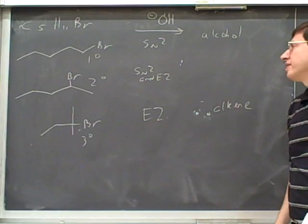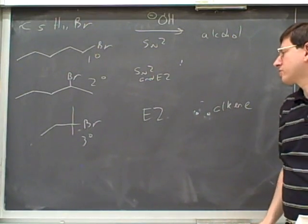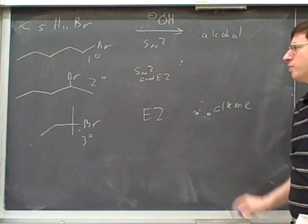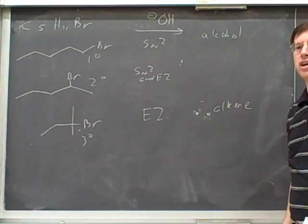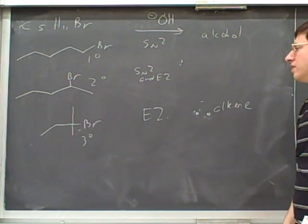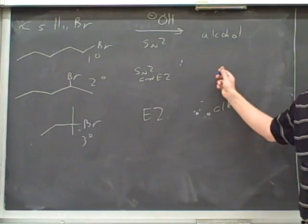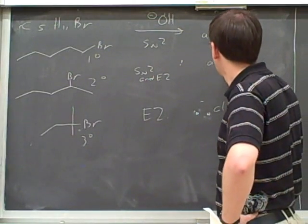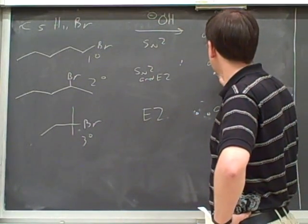So if we start with the primary, we would expect to get an alcohol. If we start with a tertiary, we expect to get an alkene. And what do we expect to get if we start with the secondary? An alkene and an alcohol. We expect to get a mixture where some of them are alcohols and some of them are alkenes.